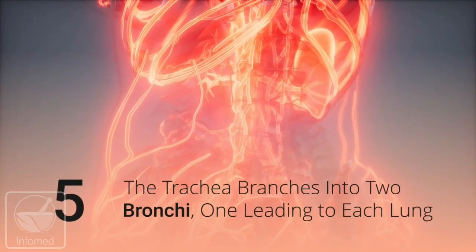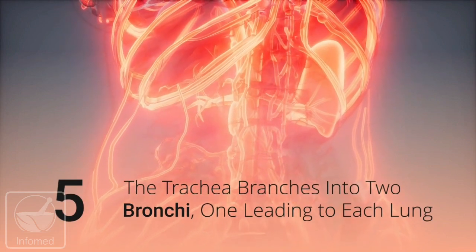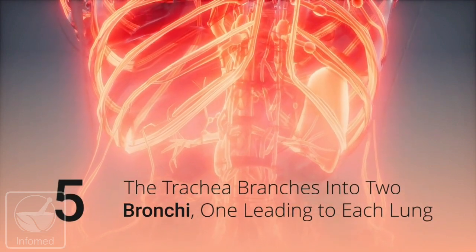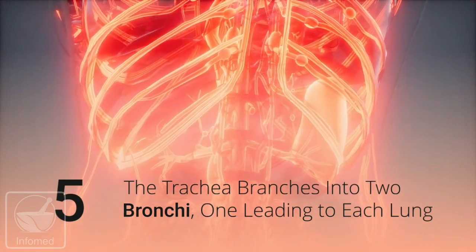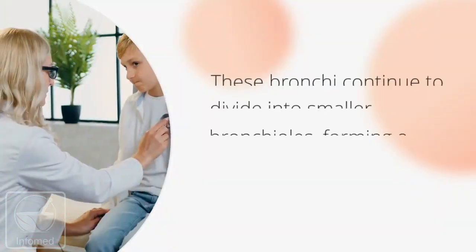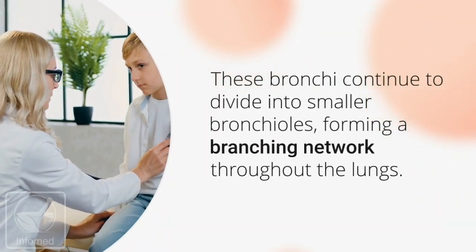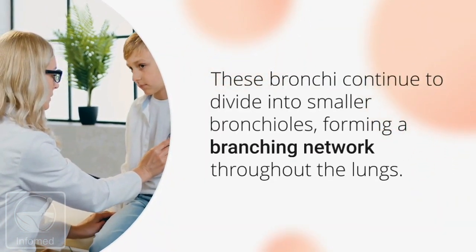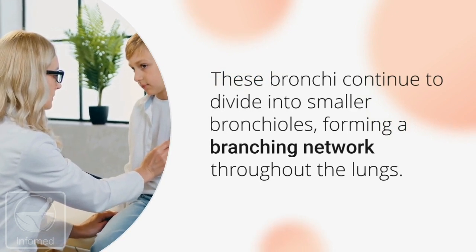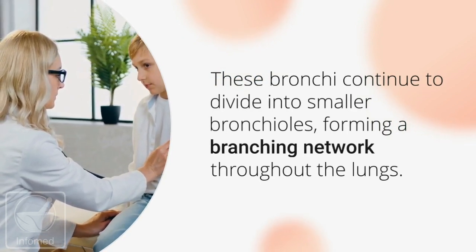The trachea branches into two bronchi, one leading to each lung. These bronchi continue to divide into smaller bronchioles, forming a branching network throughout the lungs.